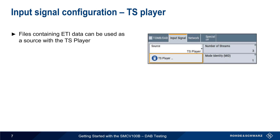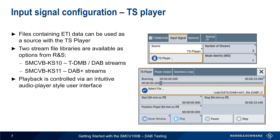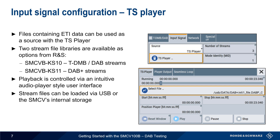ETI data in the form of a file can also be used as a source by selecting TS player as a source option. Two stream file libraries are available from Rohde & Schwarz: the KS10 library contains standard DAB streams, and the KS11 library contains DAB Plus streams. These libraries can be directly downloaded from the Rohde & Schwarz website, but playback requires the appropriate license file. The playback of stream files is controlled via an intuitive audio player type interface, and files can be played from an attached USB drive or copied to the SMCV's internal storage.